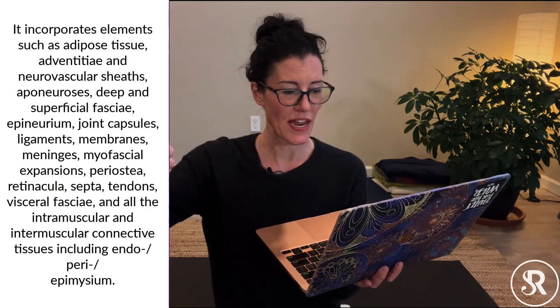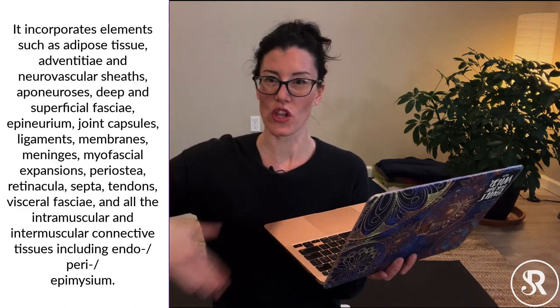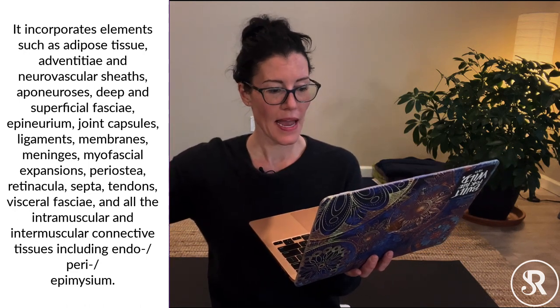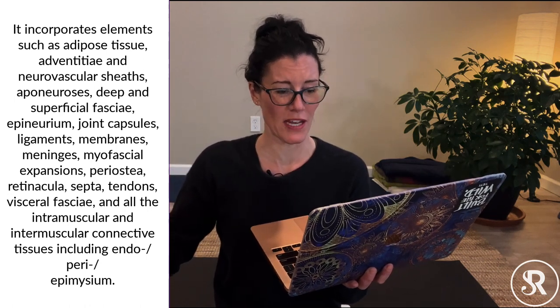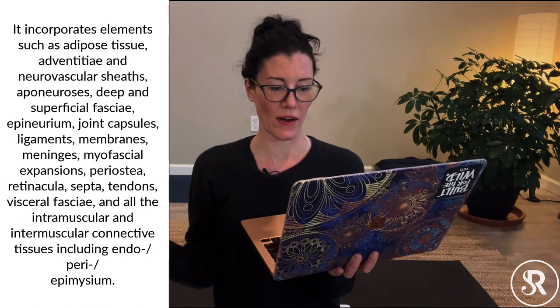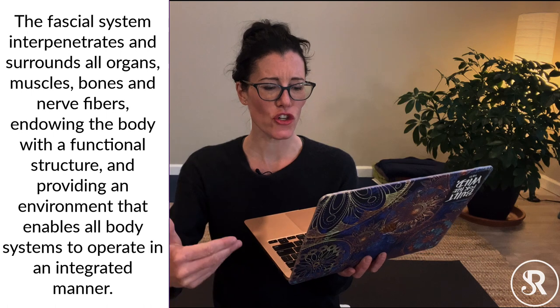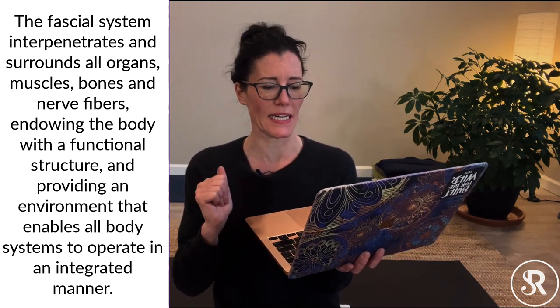The fascial system incorporates elements such as adipose tissue (that's fat), adventii and neurovascular sheaths — things that surround your nerves and blood vessels — aponeuroses, deep and superficial fascia, epineurium, joint capsules, ligaments, membranes, meninges, myofascial expansions, periostea, retinacula, septa, tendons, visceral fascia, and all the intramuscular connective tissue including endo-, peri-, and epimysium. All these words describe similar kinds of tissues that form different functions, shapes, and wrappings in the body — but they're all soft, have collagen in them, and basically wrap things and hold us together. The fascial system interpenetrates and surrounds all organs, muscles, bones, and nerve fibers, endowing the body with a functional structure and providing an environment that enables all body systems to operate in an integrated manner.